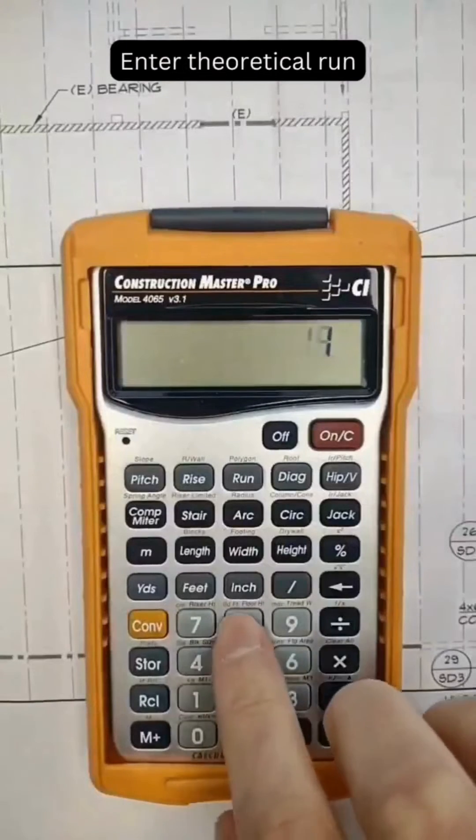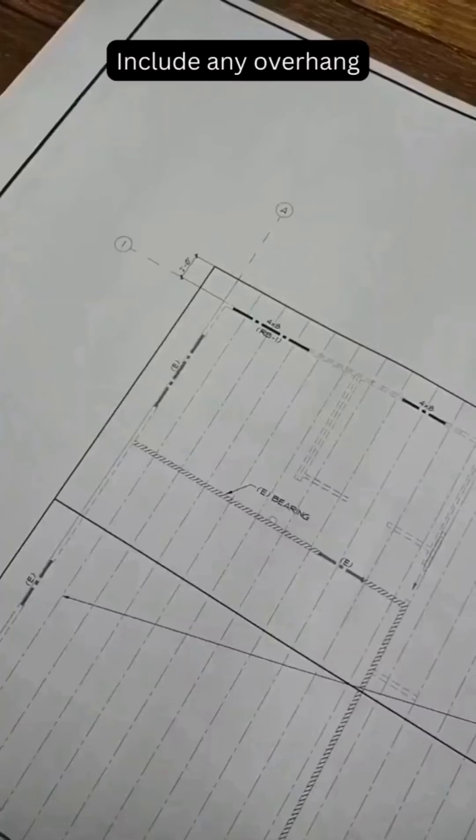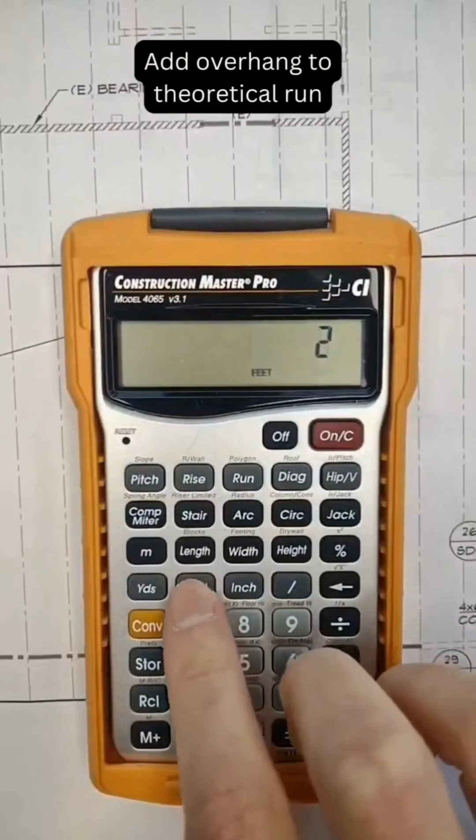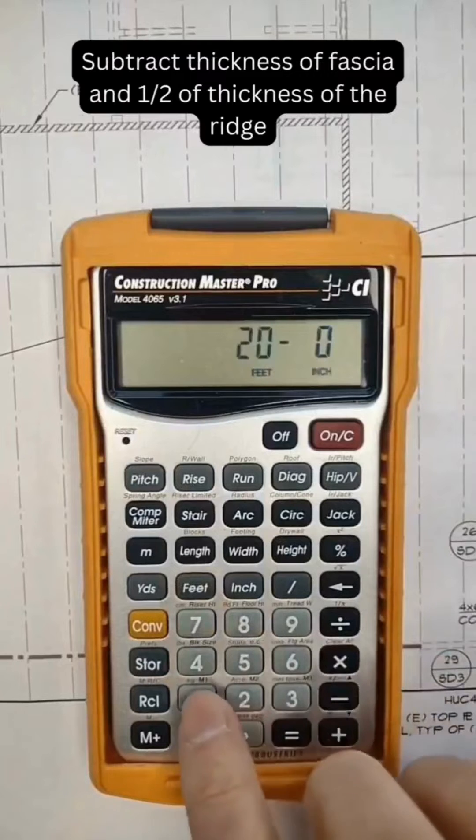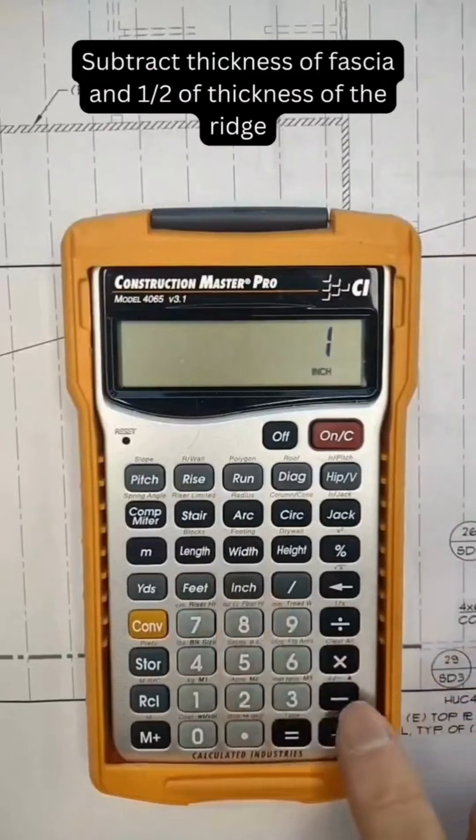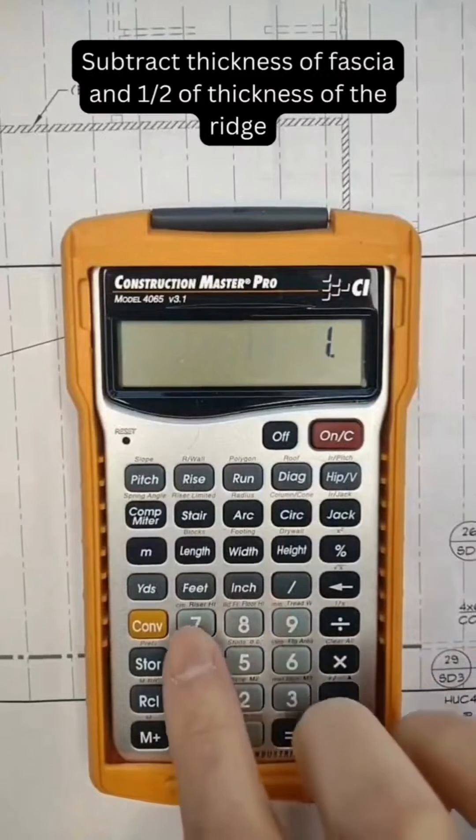Enter the theoretical run. Now add the overhang to the theoretical run, and then subtract the thickness of the fascia and half the thickness of the ridge.